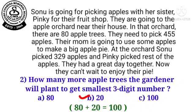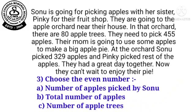Next question number 3: Choose the even number. The options are given to you. Option A: number of apples picked by Sonu. Option B: total number of apples. Option C: number of apple trees. We will see from the story what the numbers are. The number of apple trees is 80, and 80 is an even number. So, option C is the right one.